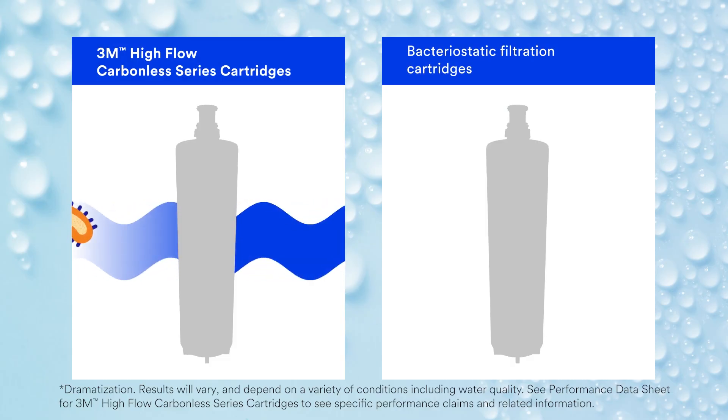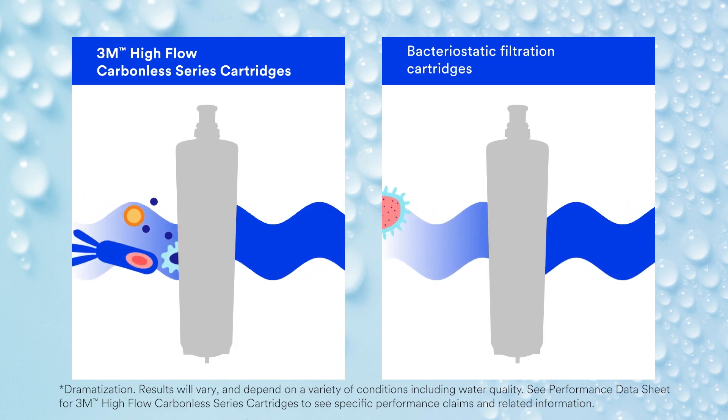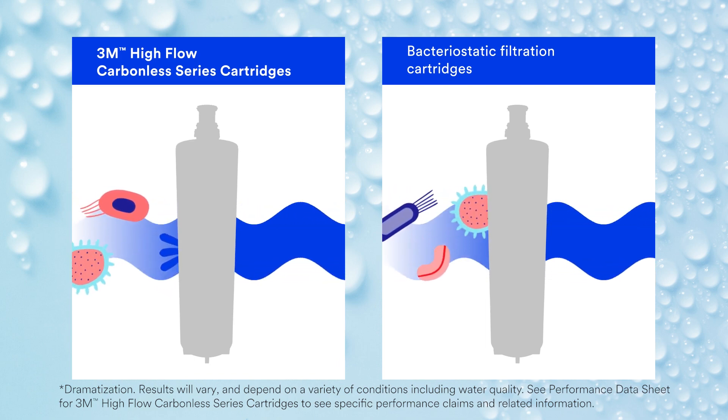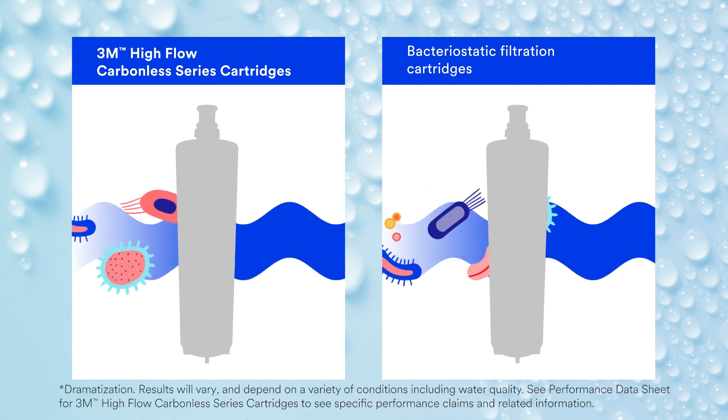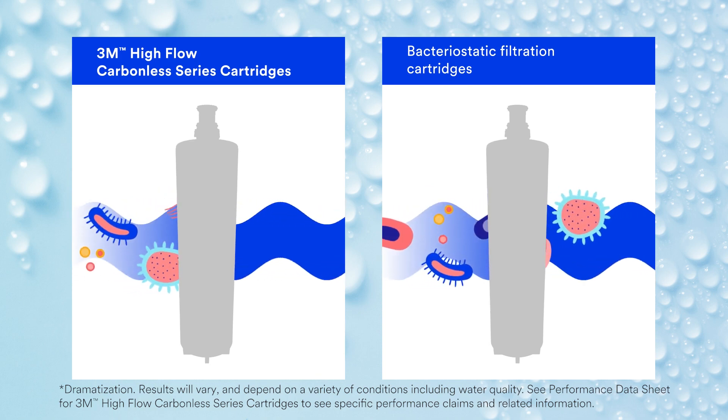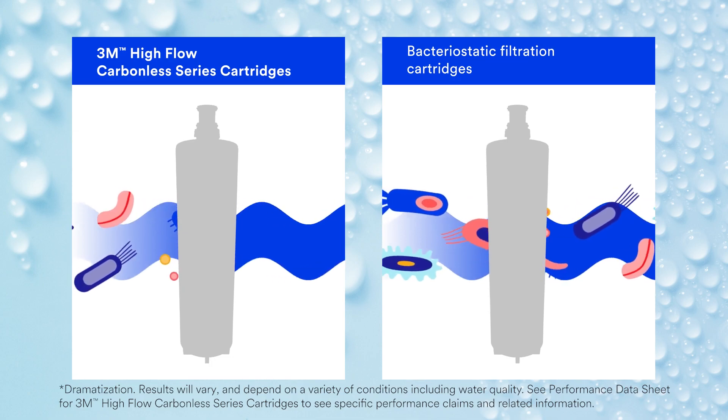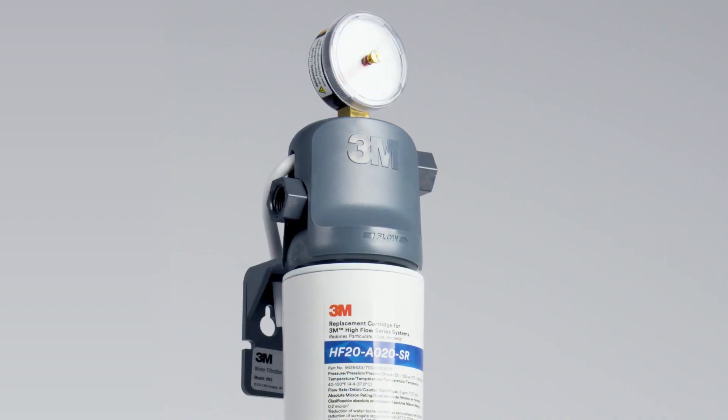3M's high flow carbonless water filtration cartridges retain and reduce the bacteria levels in water, which is dramatically different than bacteriostatic filtration cartridges. Bacteriostatic cartridges simply limit the ability of bacteria to grow within the filter, but the bacteria may not be reduced and can still be present in the water.